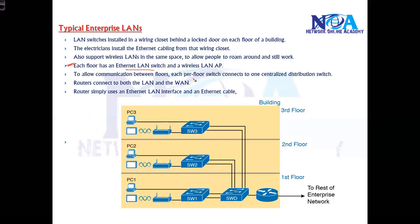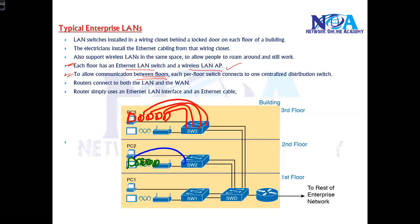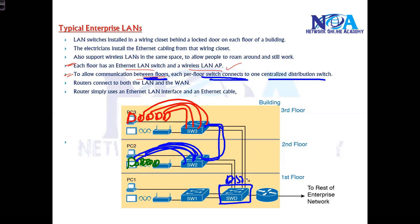In each floor, an Ethernet switch and a wireless access point will be installed. In order to communicate between floors, users on each floor connect to their nearest switch, and between switch to switch we have a connection. Each floor's switch interconnects to the centralized switch, which we generally call the centralized distribution switch.